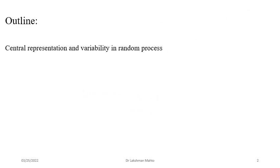The outline of today's lecture: first, we define the mean function — a time function with respect to the index. Then we define various notions of variability. One notion is autocorrelation, where the prefix 'auto' indicates we are dealing with a single random process. When dealing with multiple random processes, we would use 'cross' correlation. Another notion is autocovariance.